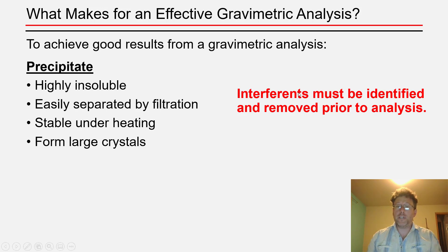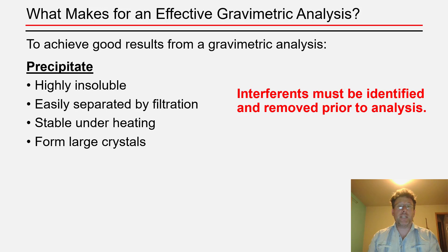It's also important that potential interference must be identified and dealt with prior to analysis. There are a couple of potential ways to remove interference, including precipitating them out, filtering them out, or using a masking agent to complex them and keep them soluble in a side chemical reaction. You need to be aware of the possibility of interference and decide how to separate them from the precipitation reaction in your gravimetric analysis.